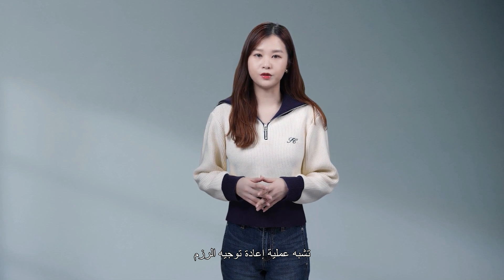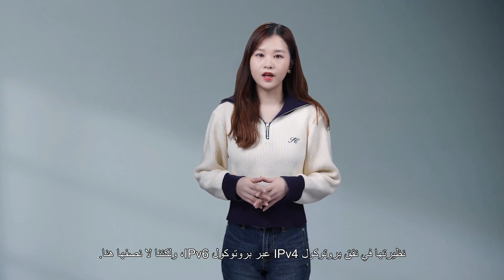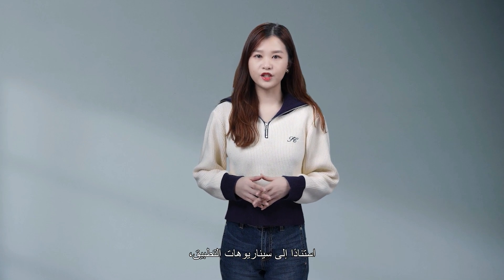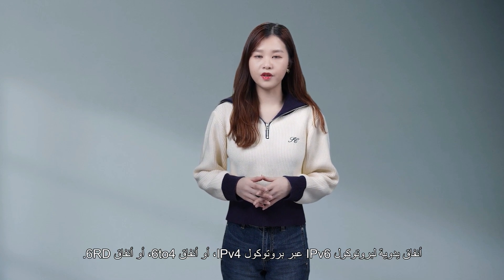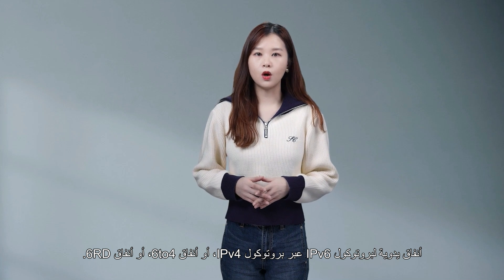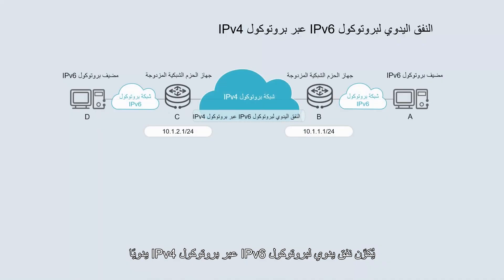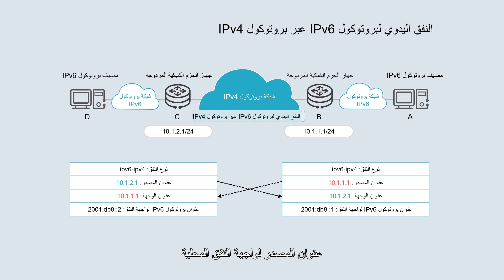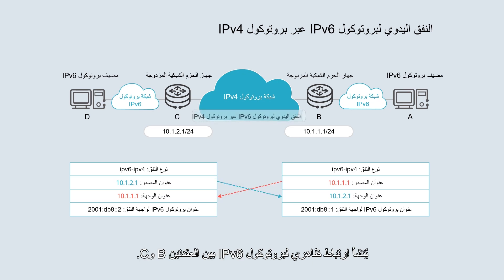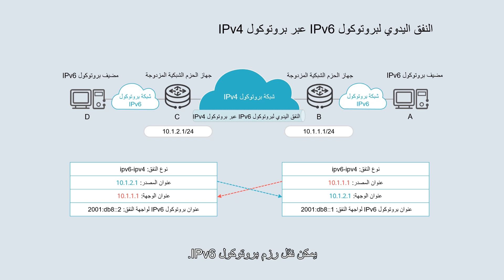The packet forwarding process is similar to that in an IPv4 over IPv6 tunnel and is not described here. Based on application scenarios, IPv6 over IPv4 tunnels are classified into IPv6 over IPv4 manual tunnels, 6to4 tunnels, or 6RD tunnels. An IPv6 over IPv4 manual tunnel is manually configured between two border routers. The source and destination IPv4 addresses of the tunnel need to be statically specified. The source address of the local tunnel interface is the destination address of the peer tunnel interface. A virtual IPv6 link is established between nodes, and when there is a reachable route between the two nodes, IPv6 packets can be transmitted.